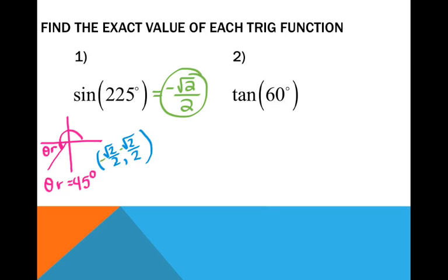To check in the calculator, change the mode to degrees. Type in sine of 225, and it gives negative 0.707. The decimal is not an exact answer, so do not write down the decimal. But you can verify that negative root 2 over 2 equals negative 0.707, which it does.